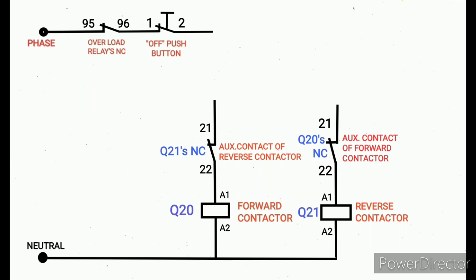Now the interlock is fulfilled, because if forward contactor gets picked up, the reverse is not allowed to pick up. If the reverse contactor picks up, the forward is not allowed to pick up.